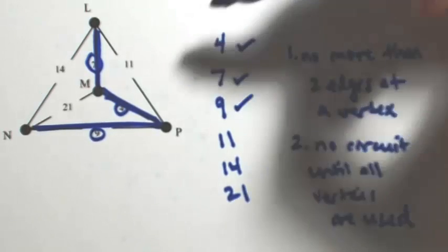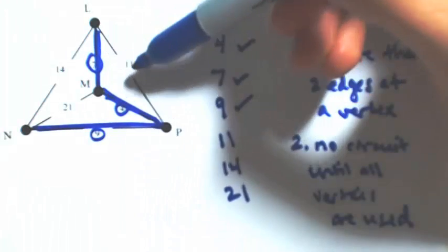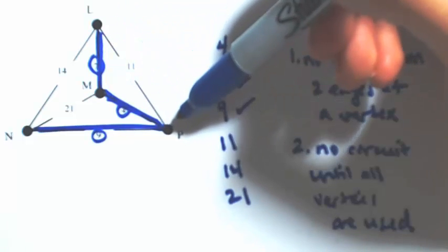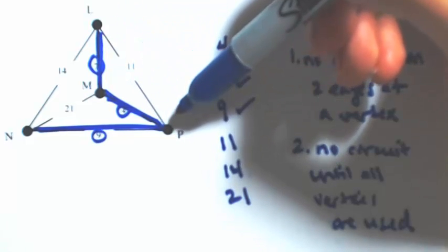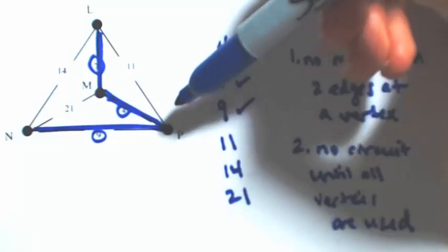Next one is 11. If I use 11, then I would cause three edges to be at P, which means that we would be visiting P twice. So we're not going to use that one.